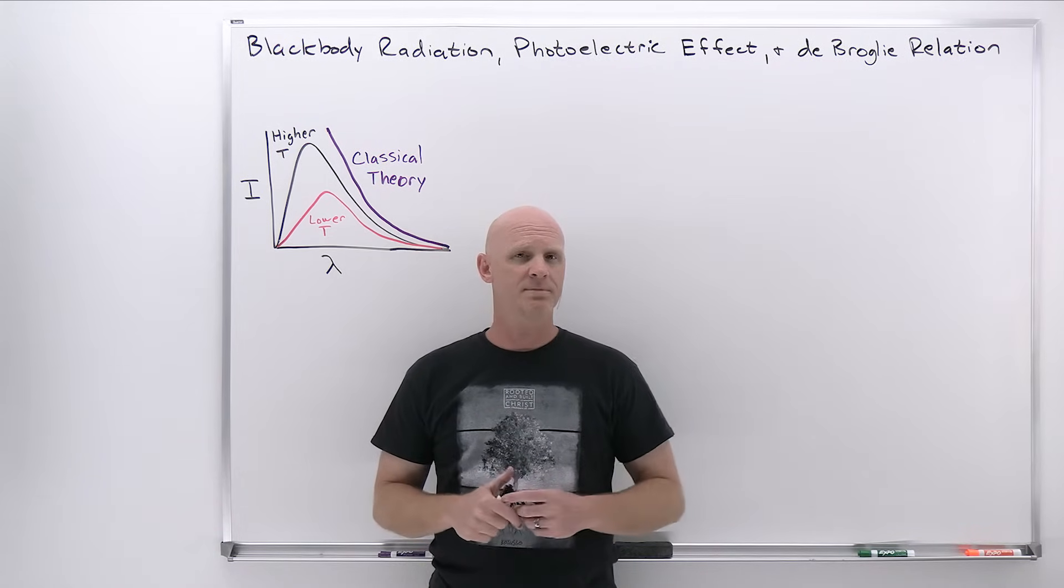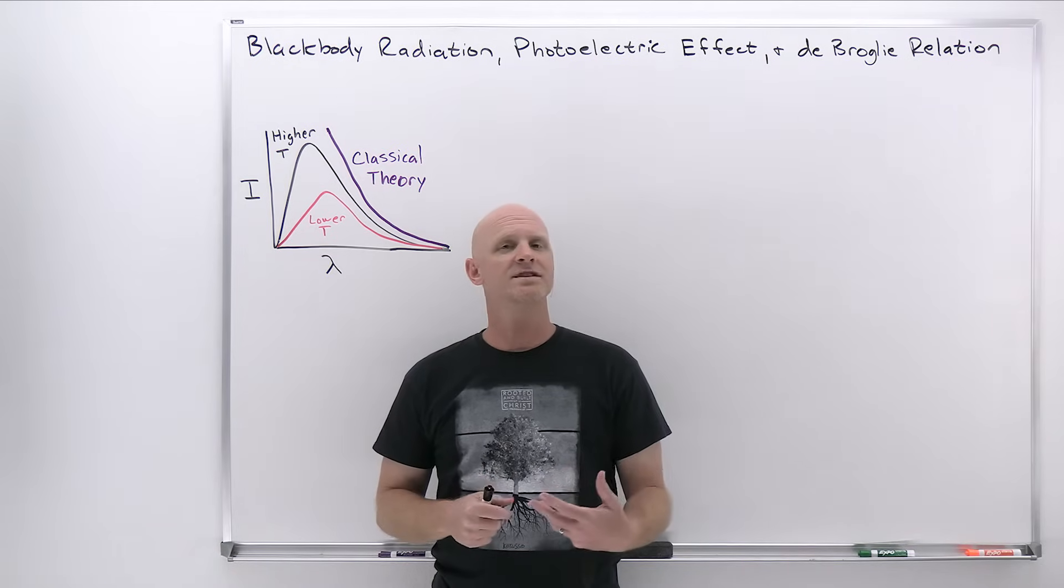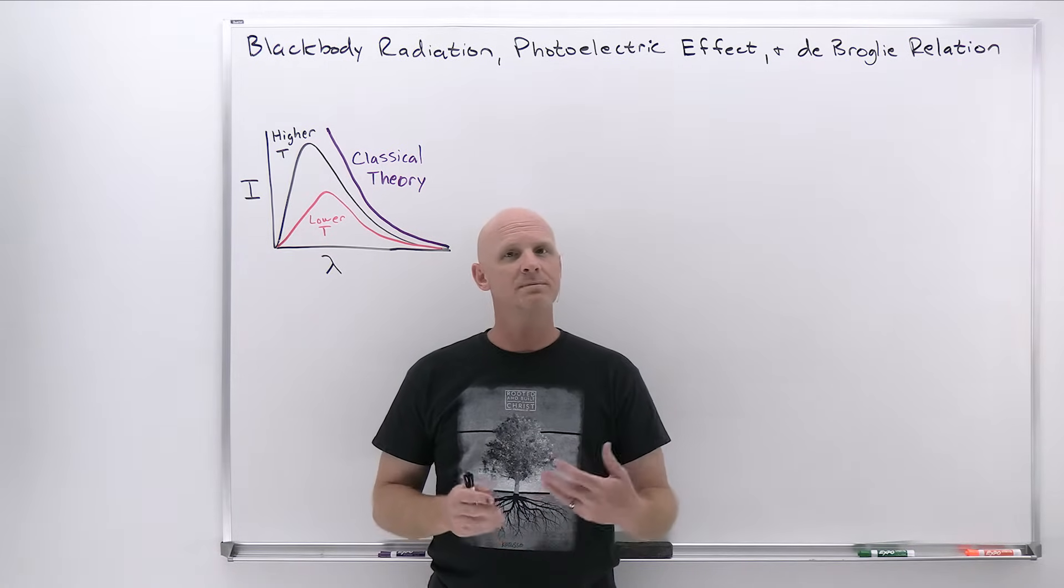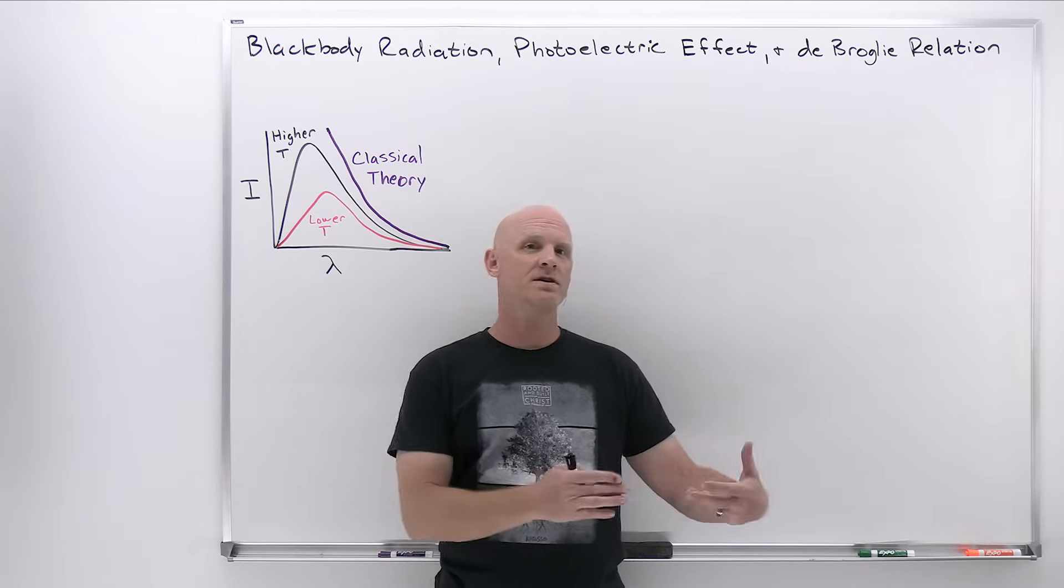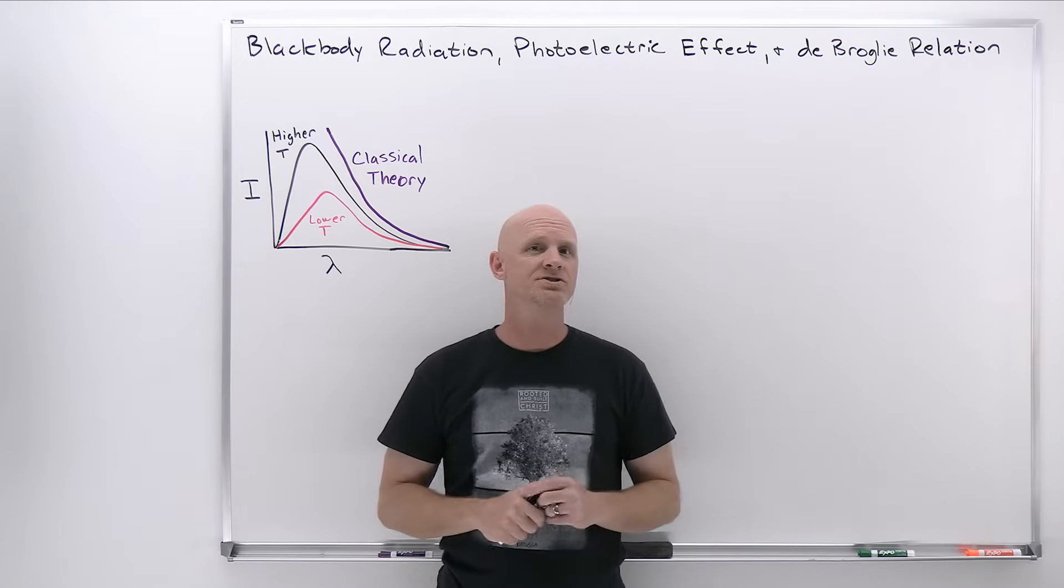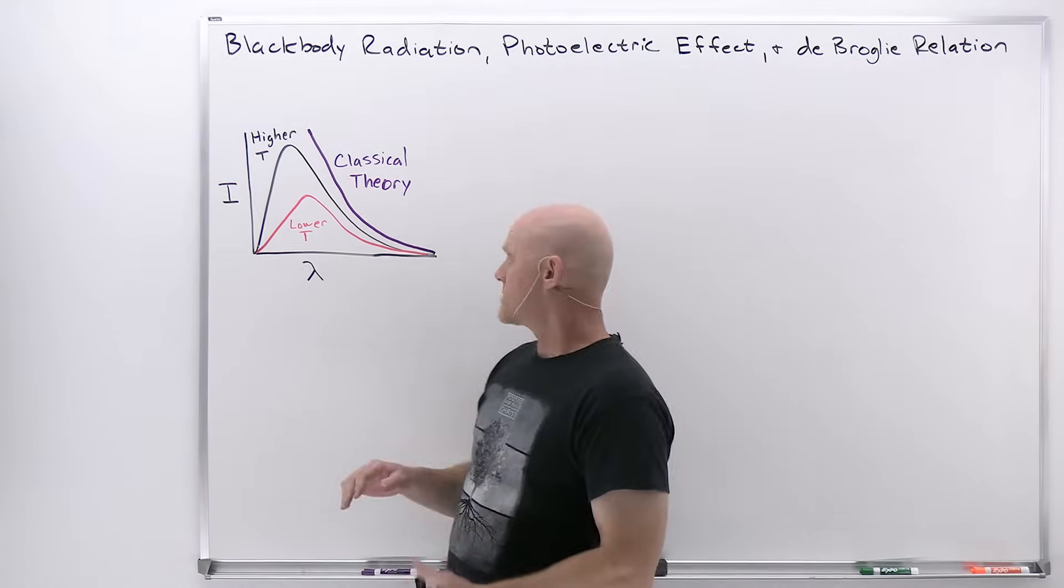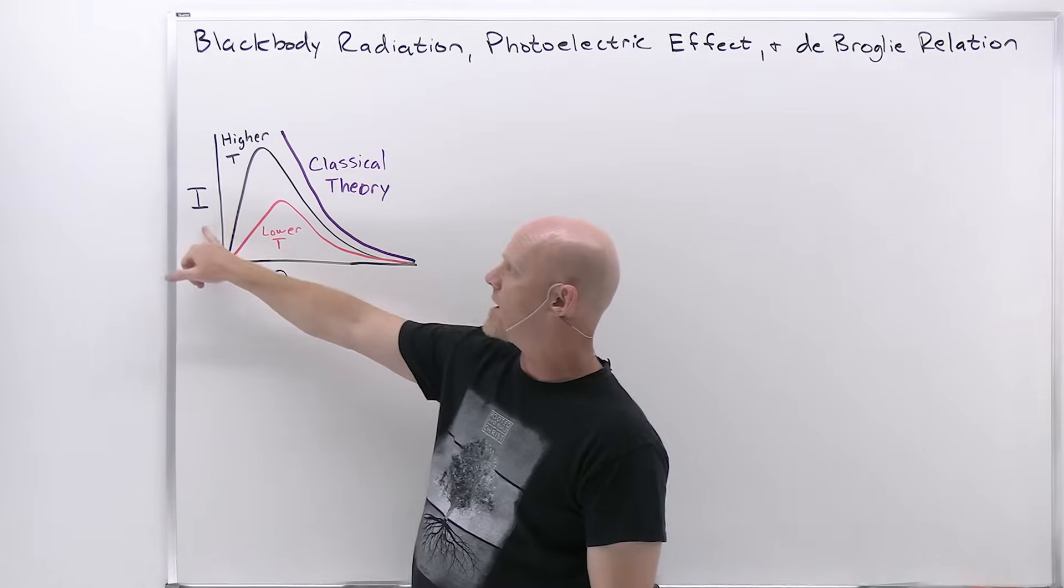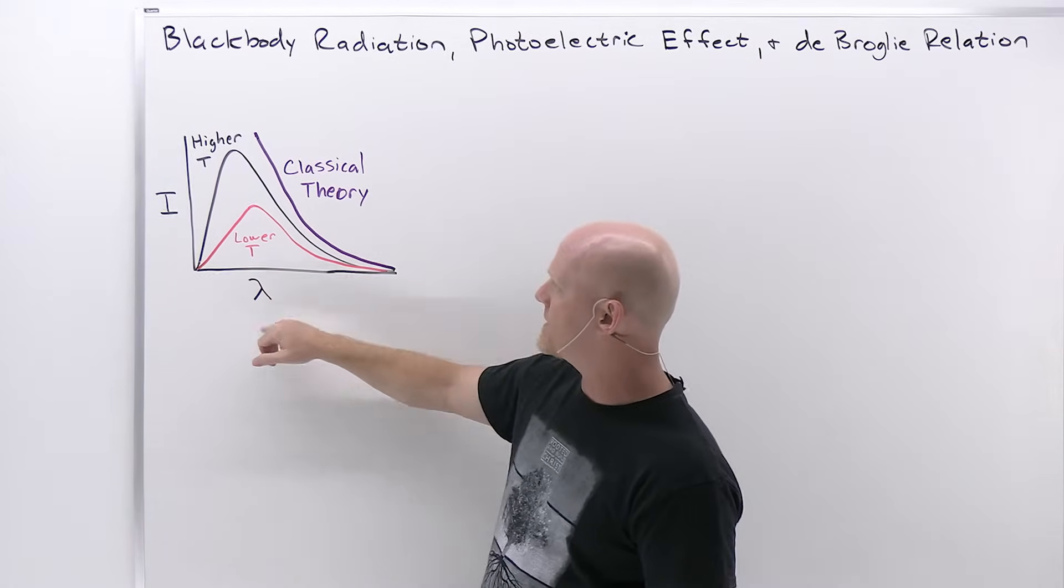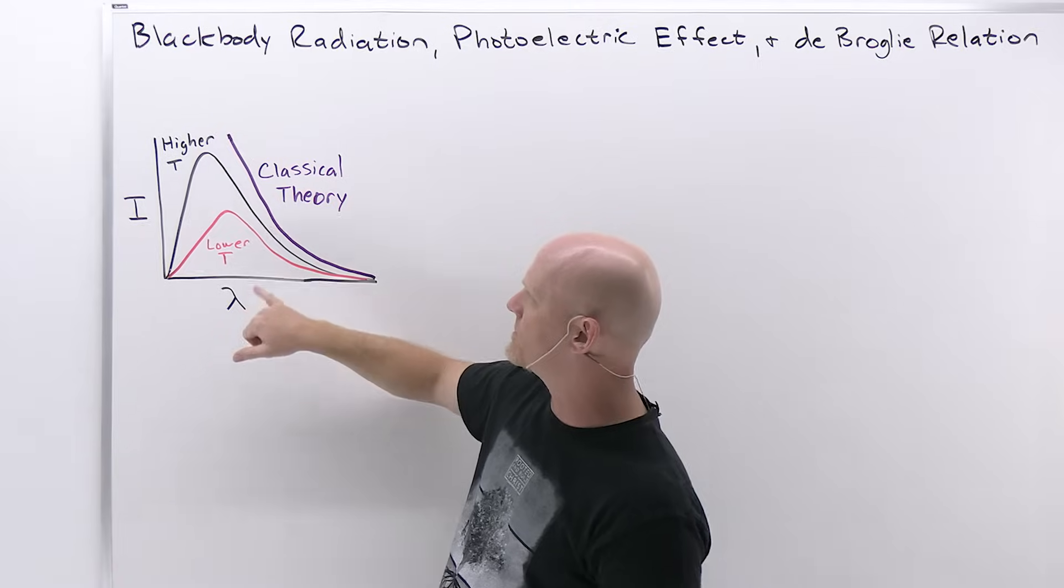And this serves as the basis for our infrared thermometers. We can tell based on the max wavelength that's being emitted what temperature that particular black body radiation corresponds to. So if we take a look at our typical observations on a plot of intensity versus wavelength, we can see a couple different temperatures.